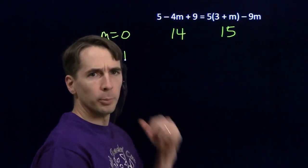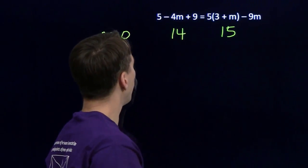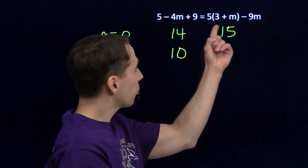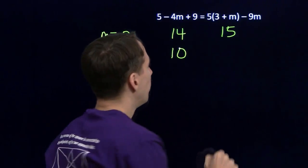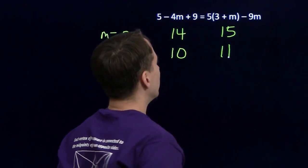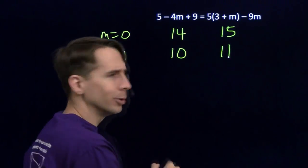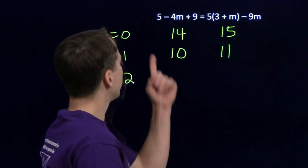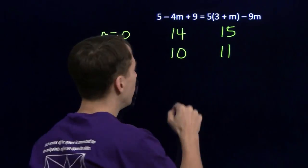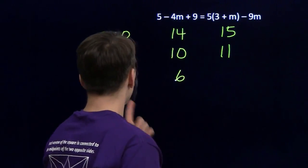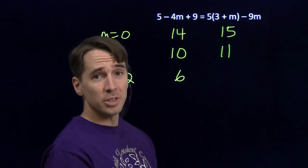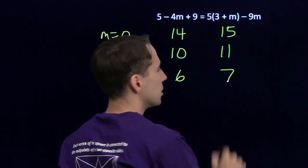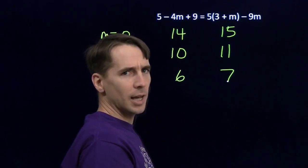Let's try m equals 1. We put that in here, that gives us 5 minus 4 is 1, plus 9 is 10. Put 1 in over here, 3 plus 1 is 4, times 5 is 20, minus 9 is 11. They're not equal either. All right, let's try m equals 2. Put that in here, 5 minus 8, negative 3, plus 9 gives us 6. Put 2 in over here, 3 plus 2 is 5, 5 times 5 is 25, minus 18 gives us 7. 6 not equal to 7.